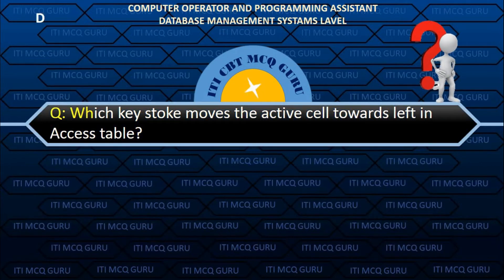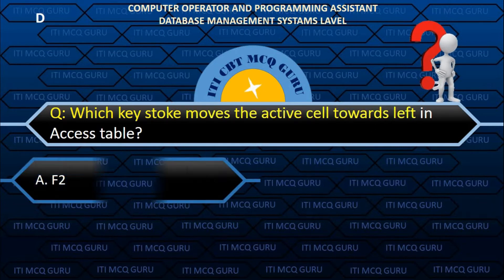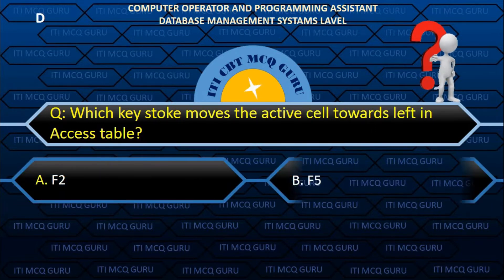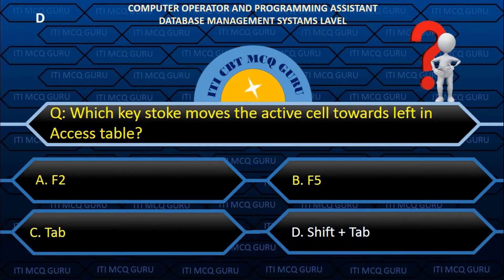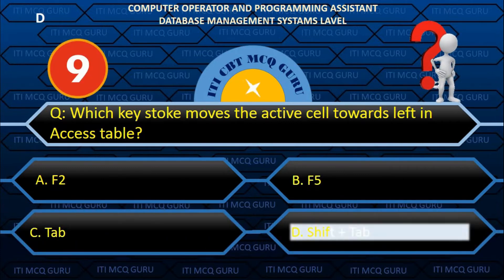Which key moves the active cell towards the left in an Access table? B. Shift + Tab.